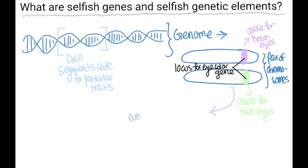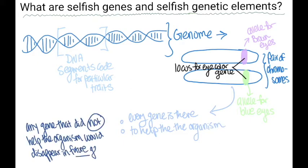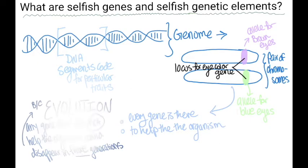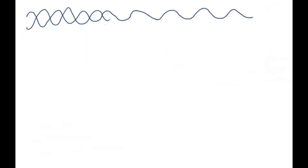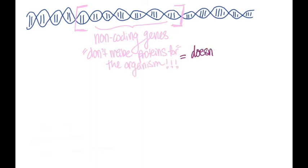It was believed that each and every gene is there inside the organism because it helps the organism, and any genes that did not do so would be lost due to natural selection. However, this consensus did not explain the fact that humans possess 30 to 50 times more DNA than needed for protein-coding genes, with these non-coding genes seemingly doing nothing for the benefit of the organism.